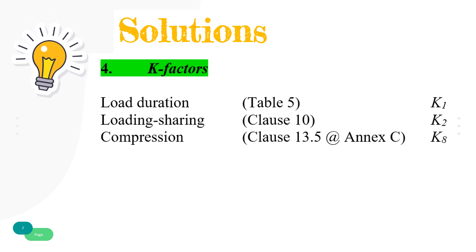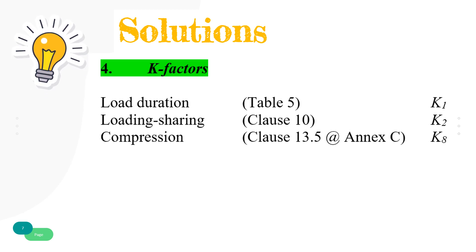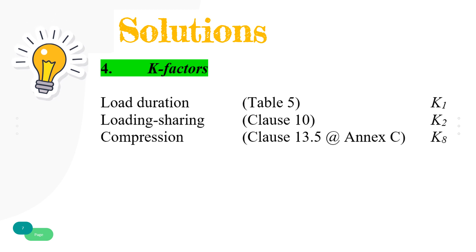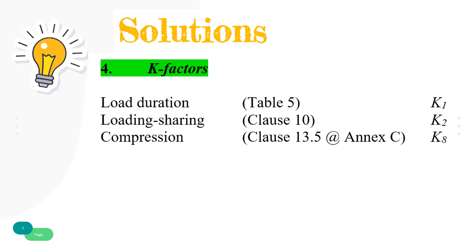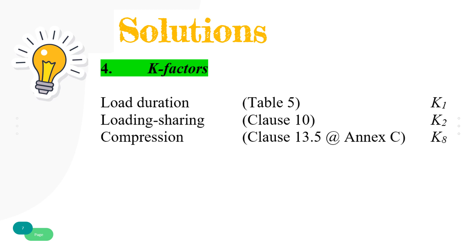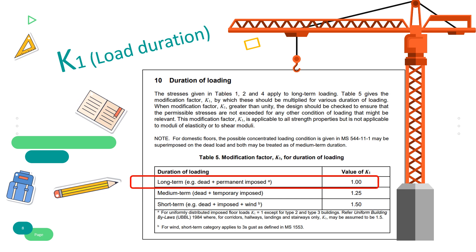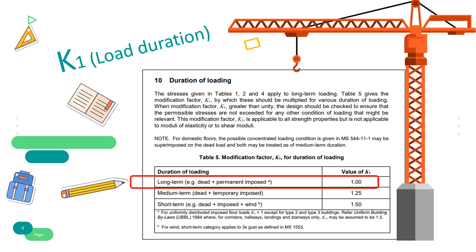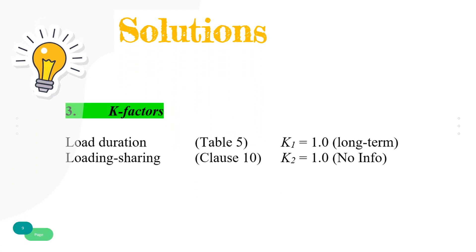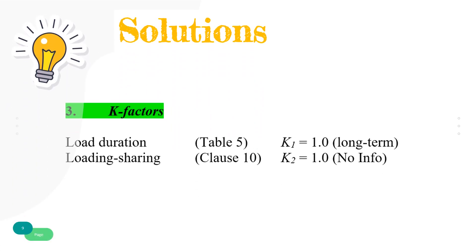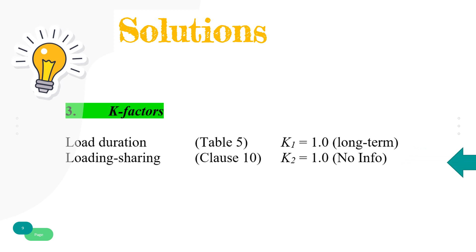Modification factors should be applied to the grade stresses as given in tables in Malaysian Standard to obtain permissible stress. For a compression member, there are only 3 modification factors to consider: K1, K2, and K8, based on the given situations. Refer to Table 5 for modification factor K1 for duration of loading. For a condition of long-term load duration, K1 is 1.0. There is no information given related to modification factor K2 for load sharing, hence K2 is 1.0.